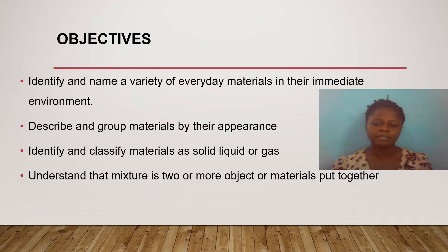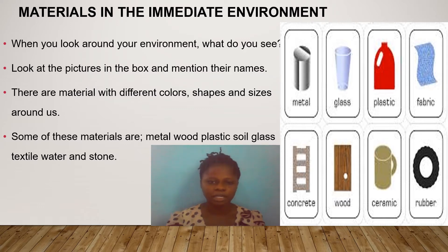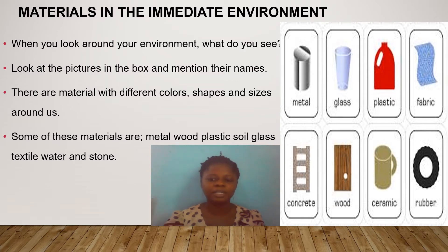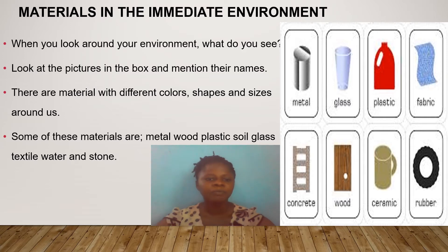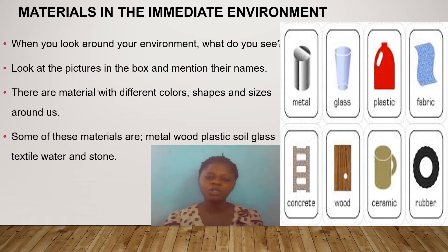Our first lesson is going to be on identifying materials in our immediate environment. When you look around, you see certain things. If you look at the picture in the box, you can see certain things placed there — can you try and name them? There are materials with different colors, shapes, and sizes around us. Some of these materials include metal, glass, plastic, fabric or textile, concrete, wood, ceramic, and rubber. All these are examples of materials.